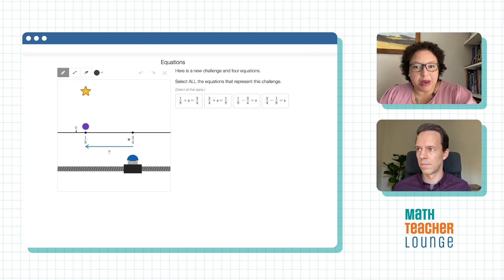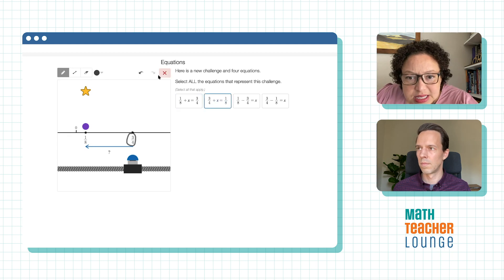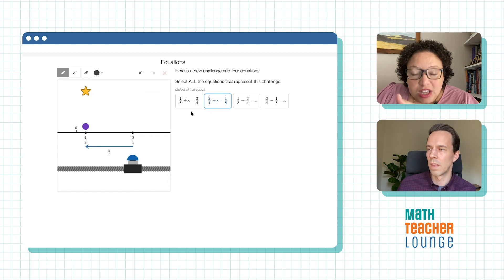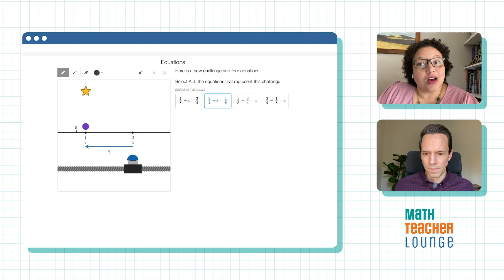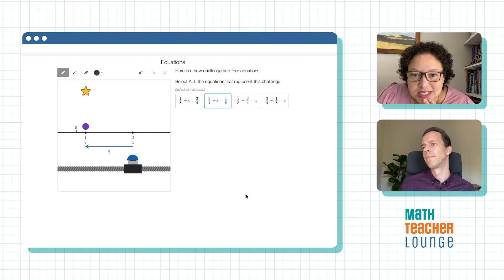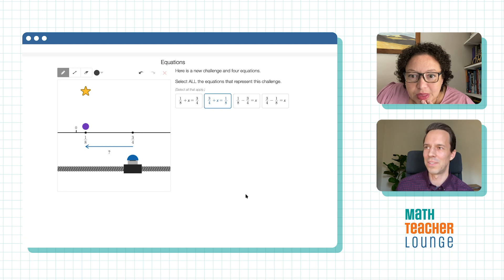Let's see. So my first response would be three fourths plus X equals one eighth, because like with the other problem, I want it to get to one eighth. So that would be, it looks like that's the second equation. That's the second option. But then I just saw it said select all the equations, which makes me, and then I'm like, Oh, but there's more, which is a whole interesting conversation itself.